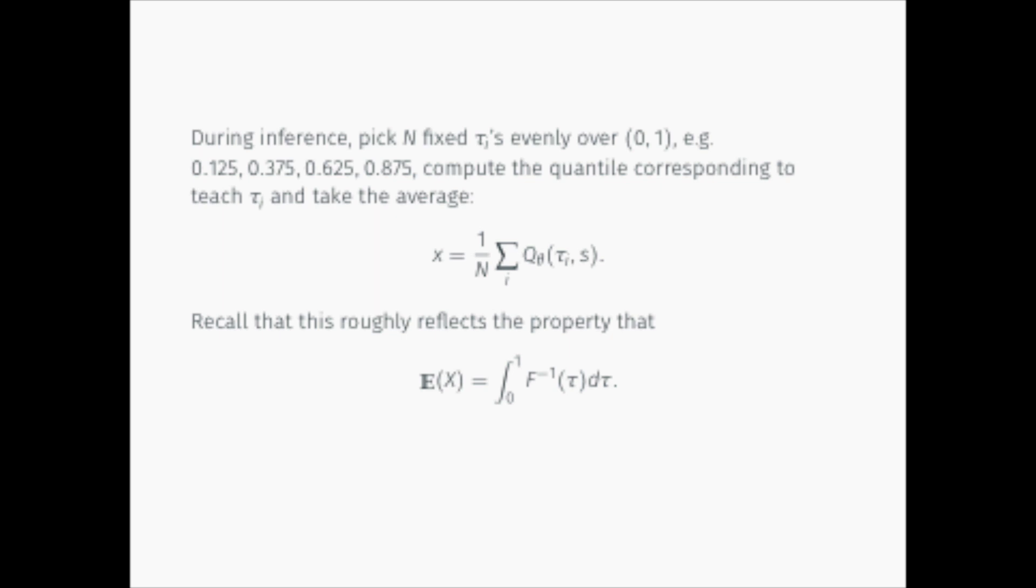During inference, pick n fixed tiles evenly over the interval. Compute the quantile corresponding to each tau. Take the average of them to obtain the final estimation. This procedure roughly reflects the property we mentioned earlier, which is the expectation of the random variable X equals to the integral of quantile from 0 to 1.